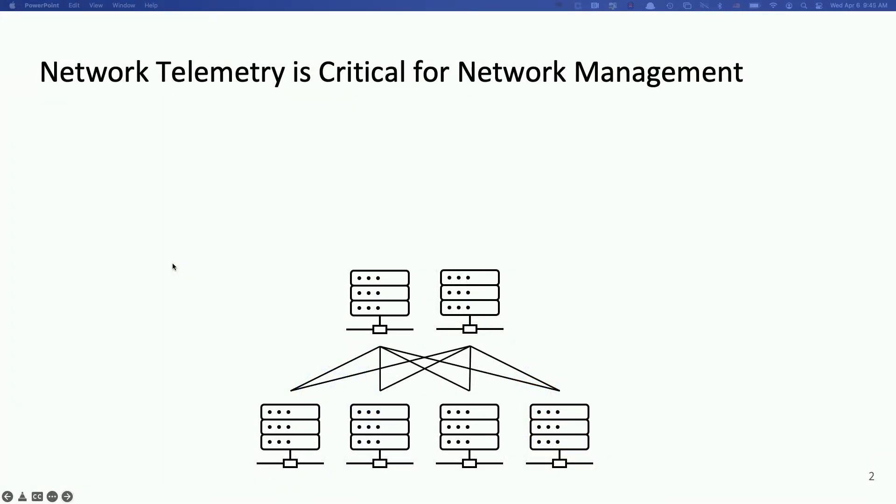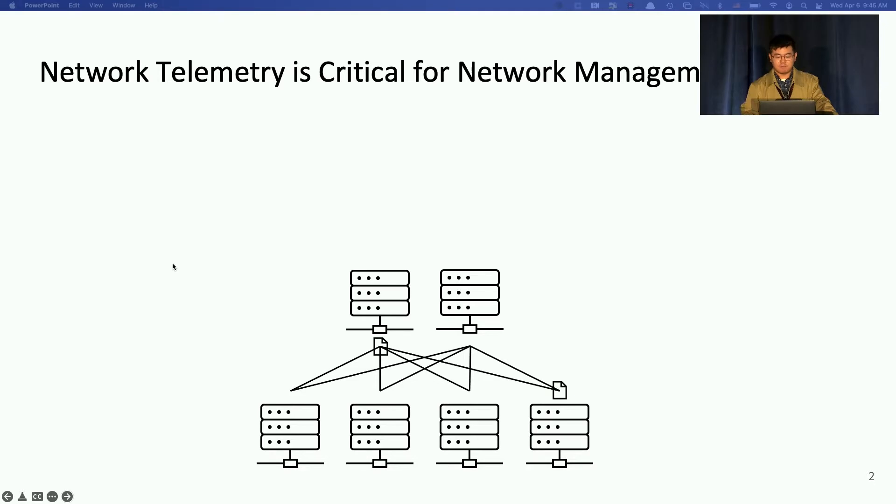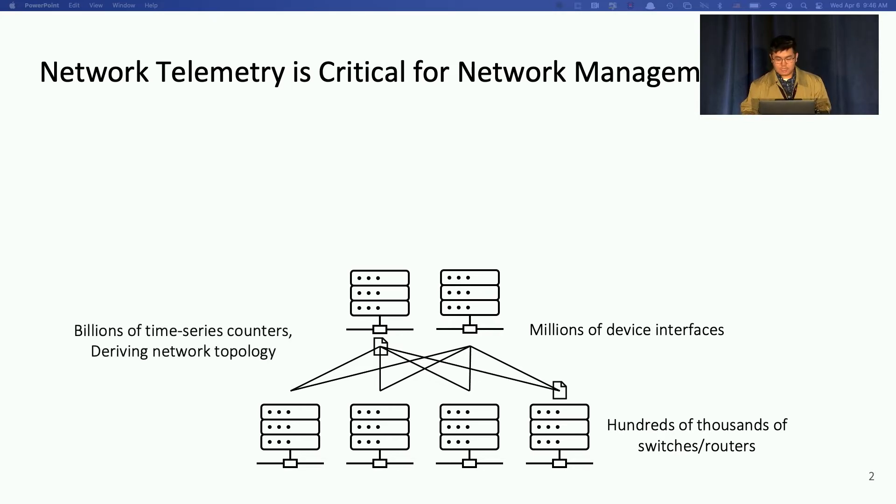At Meta, network telemetry collects device-level data and events from hundreds of thousands of routers and switches with millions of device interfaces. It also performs device-level and network-wide processing that generates time-series counters and derived network states, topologies across data centers, backbones, and edges.